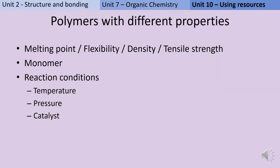When we return to polymers in Unit 10, it's to discuss their physical properties — so this could be something like melting point, flexibility, density, or tensile strength. Polymers made out of different monomers are going to have different properties because they're fundamentally different materials, so polyethene and polypropene don't have the same melting point. But we can also influence these physical properties by changing the reaction conditions — by forming the polymer at a different temperature, under a different pressure, or by using a different catalyst.